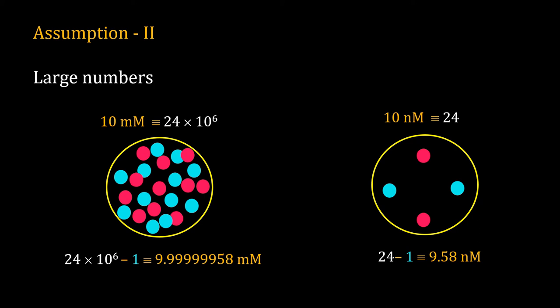We have a cell of one micron size. The concentration of the red molecule is 10 millimolar. Approximately, that is equivalent to 24 times 10 to the power 6 molecules inside the cell. Now when the reaction happens, one red molecule is consumed, so the number of red molecules decreases by 1. That changes the concentration of the molecule to 9.9999999958 millimolar.